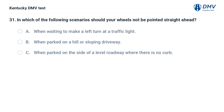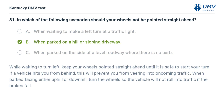In which of the following scenarios should your wheels not be pointed straight ahead? A. When waiting to make a left turn at a traffic light. B. When parked on a hill or sloping driveway. C. When parked on the side of a level roadway where there is no curb. The correct answer is B, when parked on a hill or sloping driveway. While waiting to turn left, keep your wheels pointed straight ahead until it is safe to start your turn. If a vehicle hits you from behind, this will prevent you from veering into oncoming traffic. When parked facing either uphill or downhill, turn the wheels so the vehicle will not roll into traffic if the brakes fail.